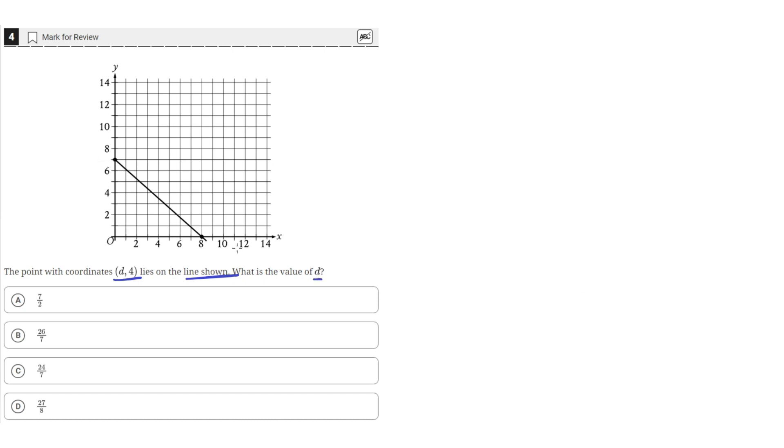Okay, so we have this line and let's start off by finding its equation in y equals mx plus b format, where m is the slope and b is the y-intercept.